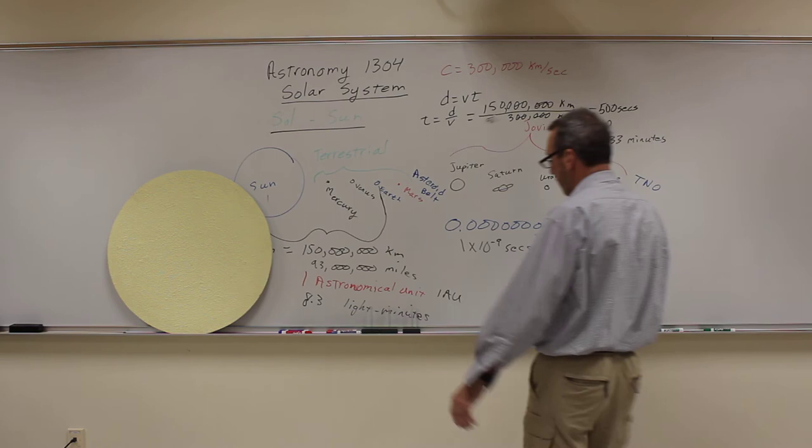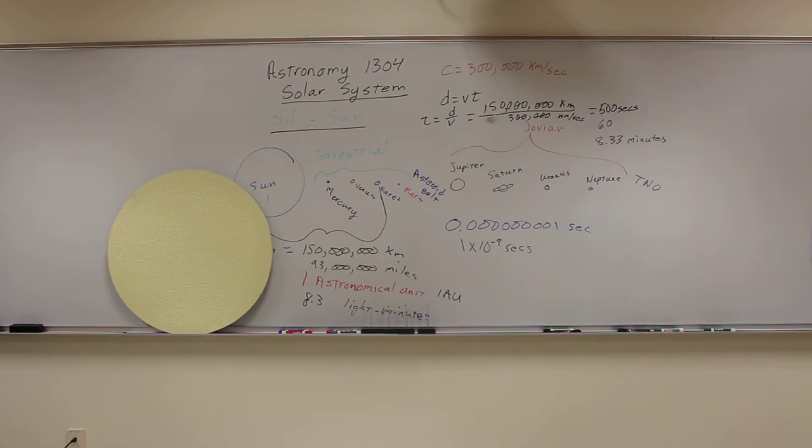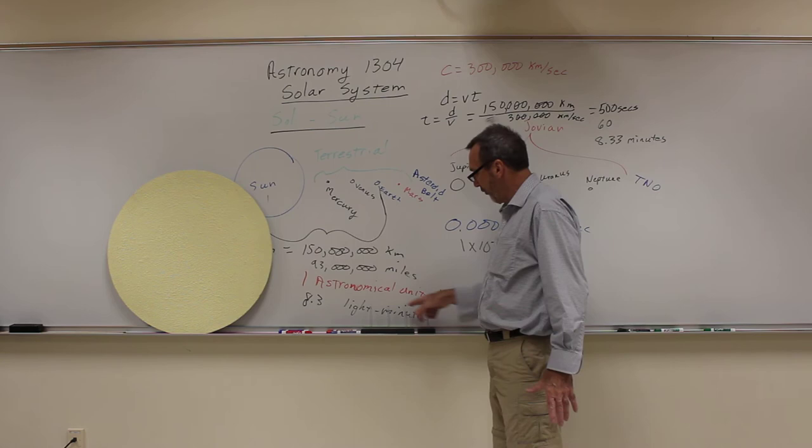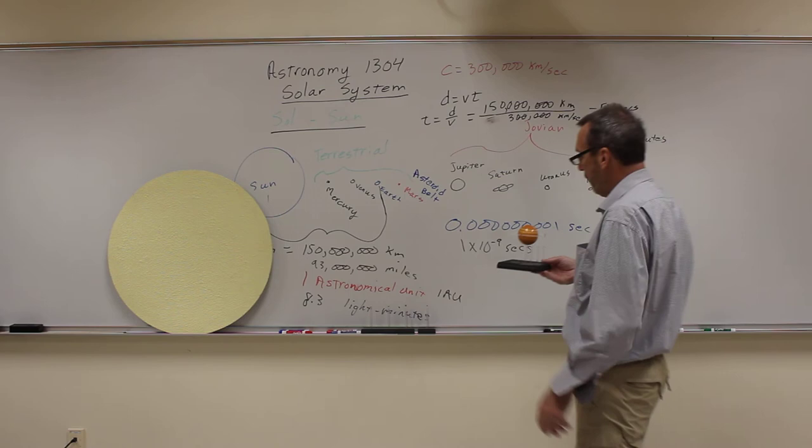The next planet after that is Mars. Mars is about half the size of the Earth. But Mars would be at a distance of 371 and a half feet. And those are the close planets. These are the terrestrial planets. Notice the small chunks of rock right in here. Now we get to the bigger planets. We get to Jupiter.